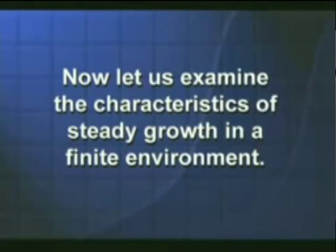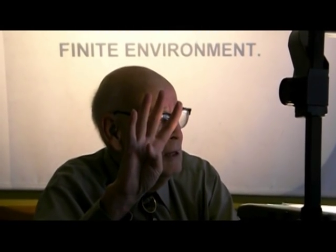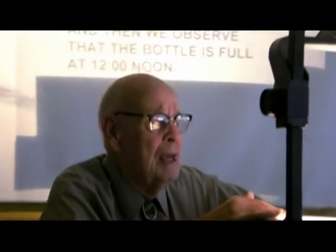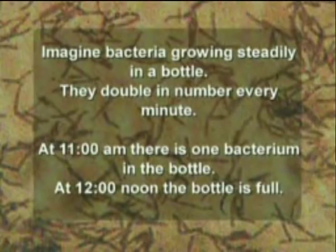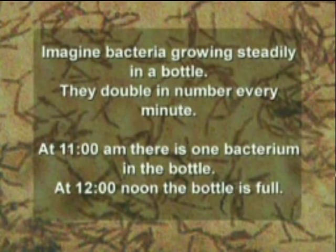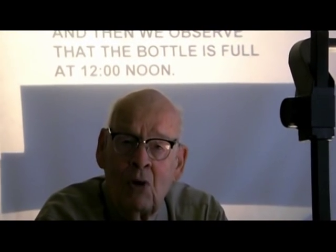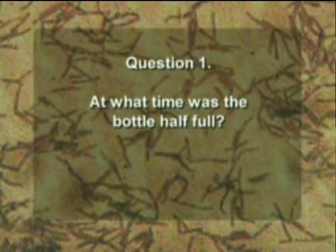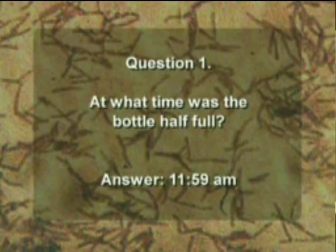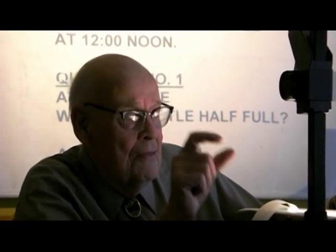Let's look at what happens when we have this kind of steady growth in a finite environment. Bacteria grow by doubling — one bacterium divides to become two, two divide to become four, four become eight, sixteen, and so on. Suppose we had bacteria that doubled every minute. Suppose we put one bacterium in an empty bottle at eleven in the morning and observe that the bottle's full at twelve noon. That's ordinary, steady growth: doubling time of one minute, finite environment of one bottle. Question one: at what time was the bottle half full? Would you believe eleven fifty-nine? One minute before twelve, because they double in number every minute. Please remember: this kind of steady growth is the centerpiece of the entire global economy.